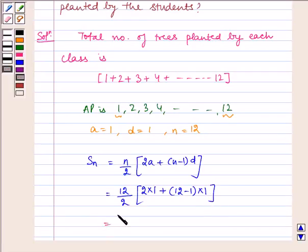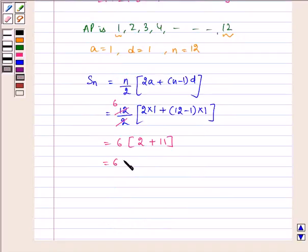which is equal to 6 multiplied by 2 plus 11, which is equal to 6 multiplied by 13 which is equal to 78.